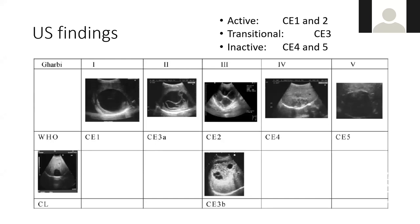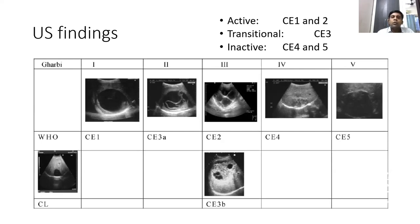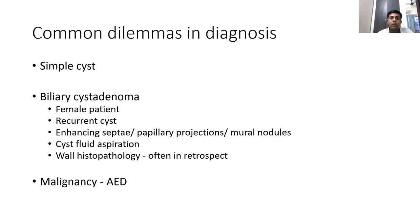CE4 shows a heterogeneous appearance due to degenerated membranes with no daughter cysts visible. CE5 is a calcified stage. This classification matters clinically because it tells us about the viability of the parasite: CE1 and CE2 indicate active disease, CE3 is transitional, and CE4 and CE5 indicate inactive disease where further intervention is not needed.